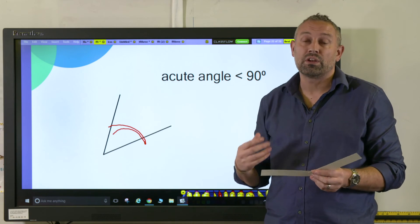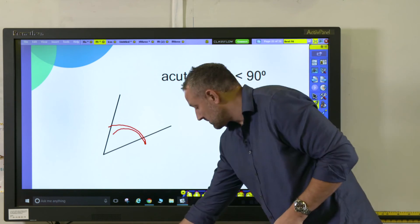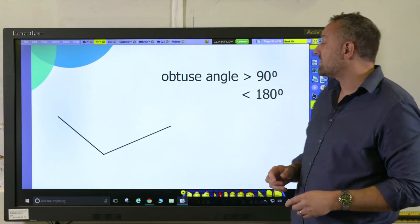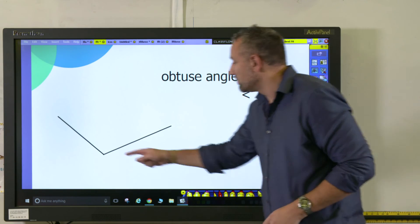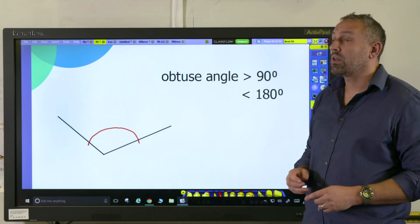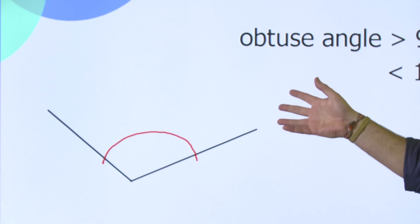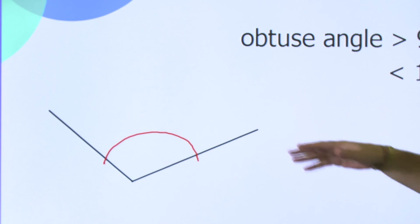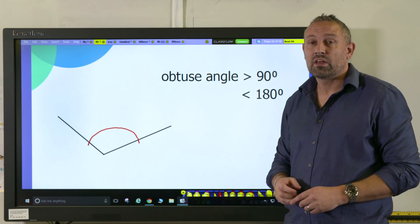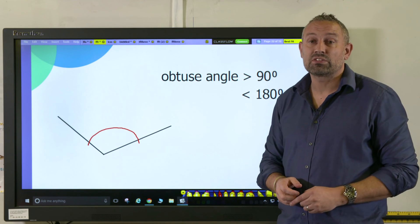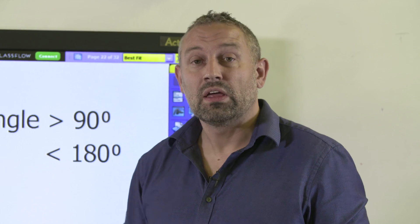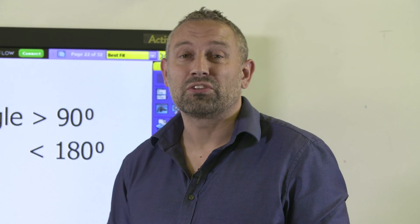Lastly, the one that we'll look at is the obtuse angle, like that. An obtuse angle is more or larger than 90 degrees and less than 180 degrees. They're the key facts that you need to start off for identifying angles, and from then we can build on and we can start to look at numbers.